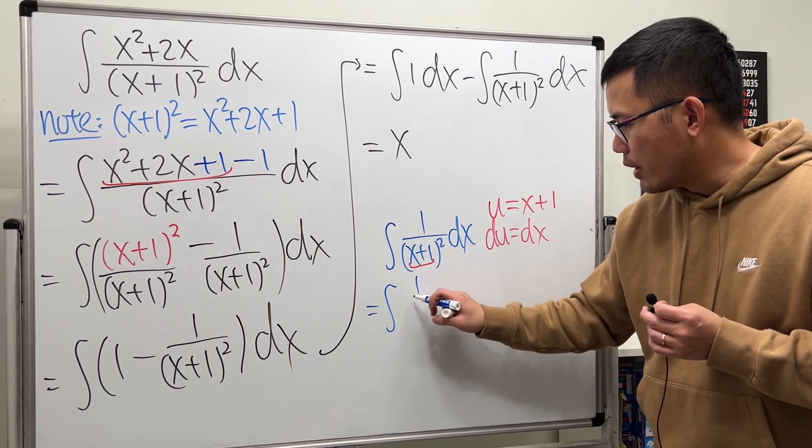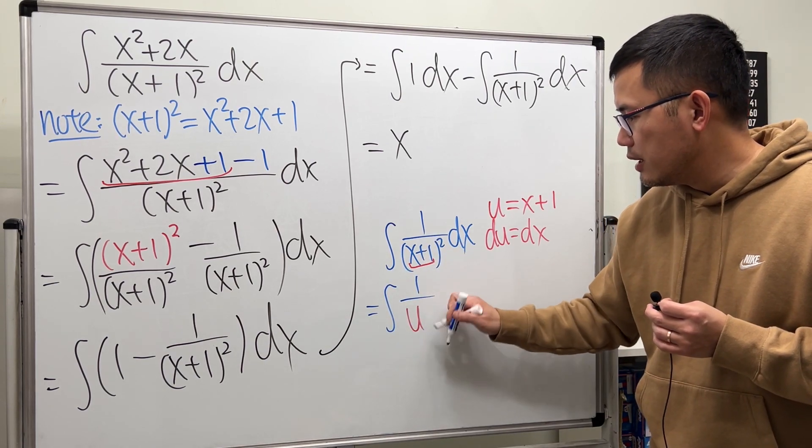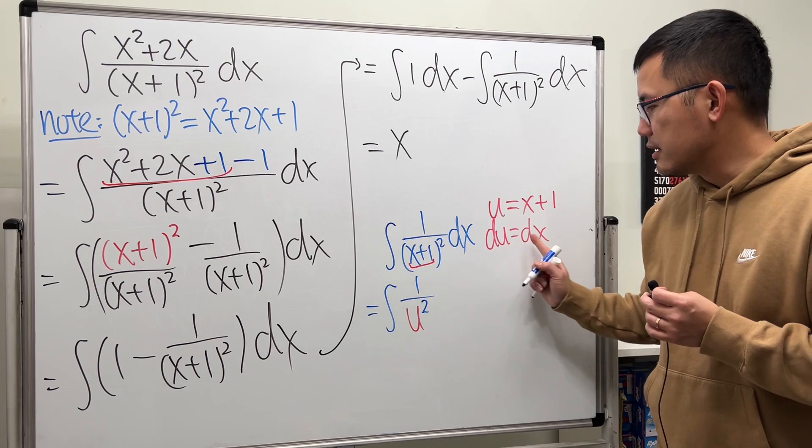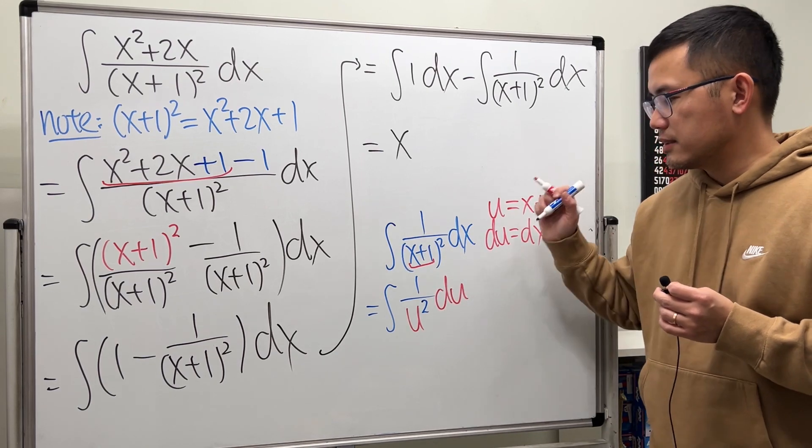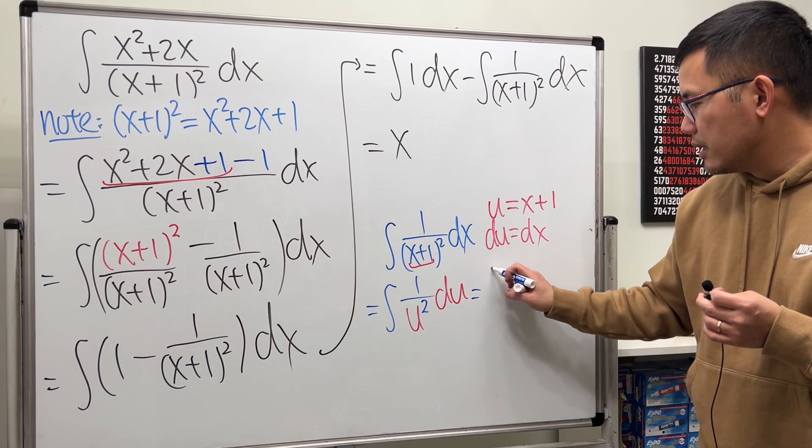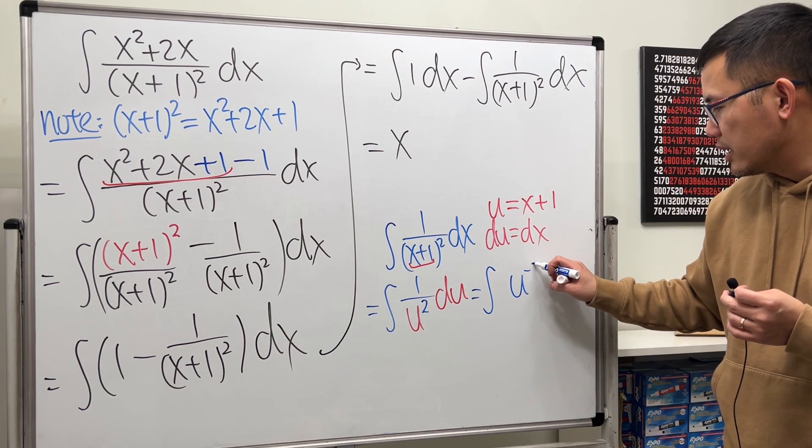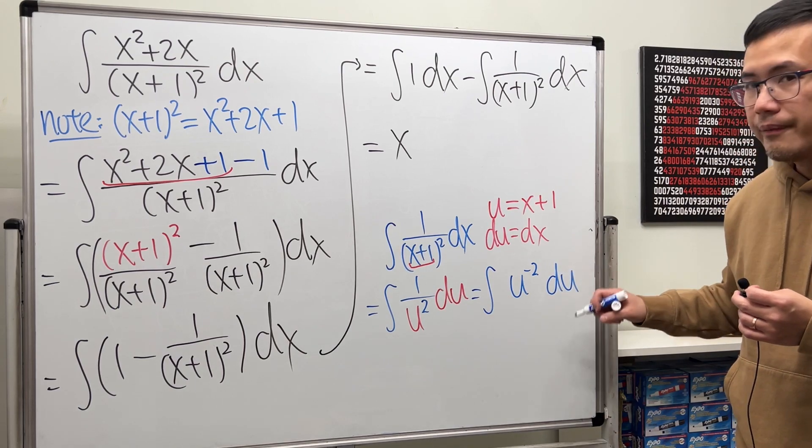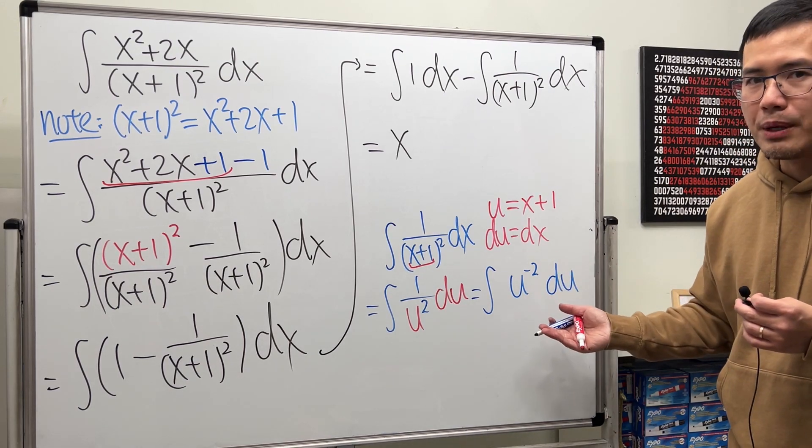Now take this integral from the x world to the u world. We get integral 1 over u squared. That is the same as du. Nice. Then we can say this is the same as integrating u to the negative 2.